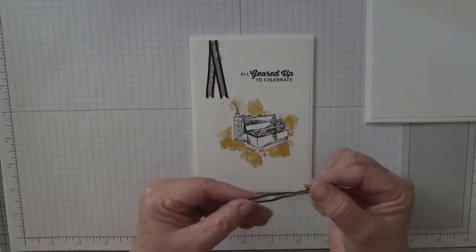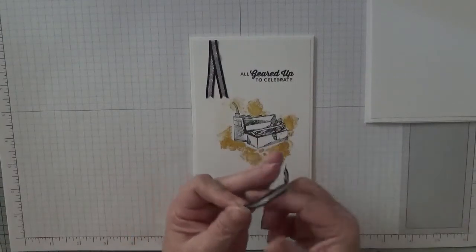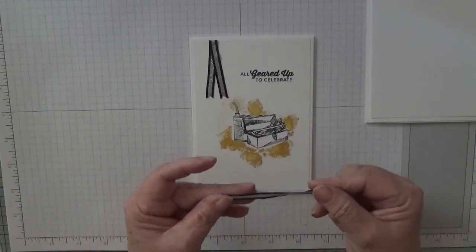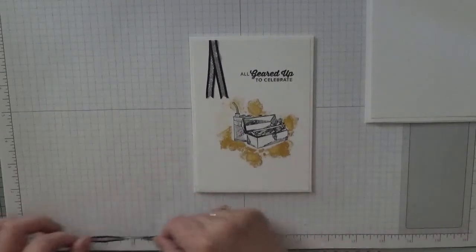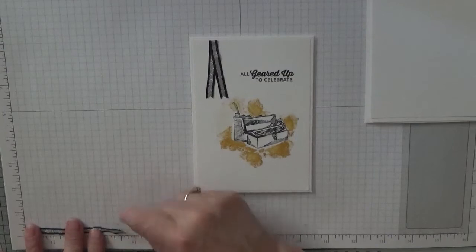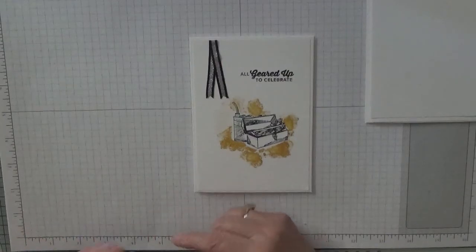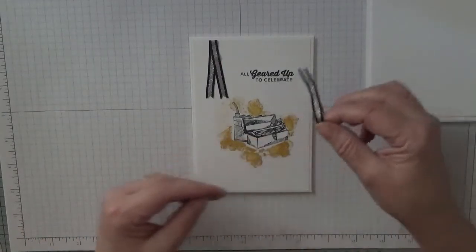I also used a piece of this new ribbon which comes with the garage suite. I forgot what it's called, but you'll need a piece of ribbon about 4 1⁄2 inches.